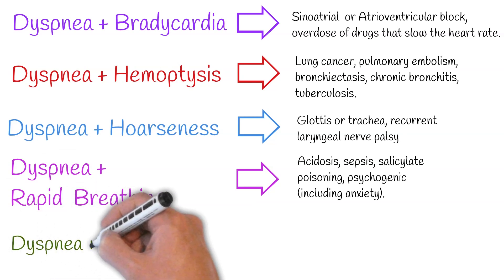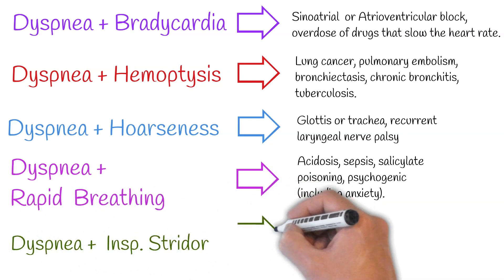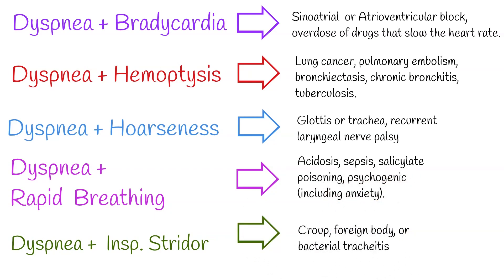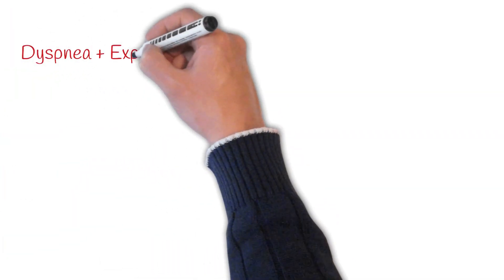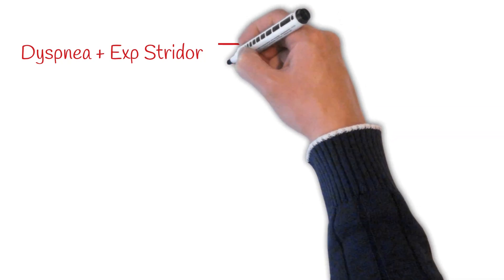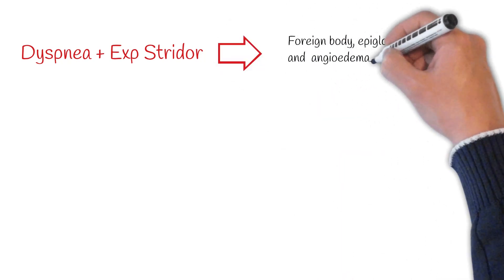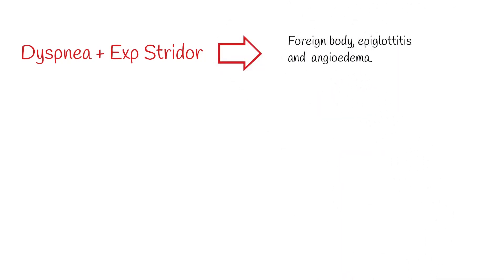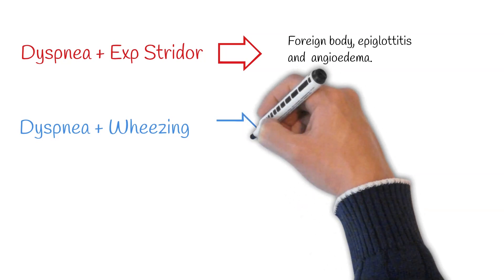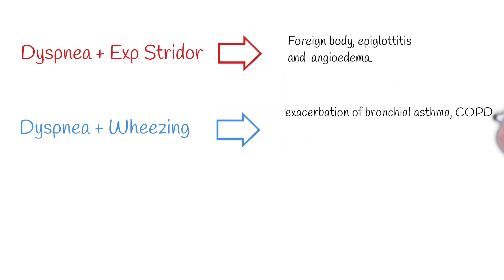Stridor — an abnormal, high-pitched, musical breathing sound — during inspiration can be a sign of croup, a foreign body, or bacterial tracheitis. Stridor during expiration or combined with inspiration can be caused by a foreign body, epiglottitis, or angioedema. Wheezing with difficulty breathing can indicate an exacerbation of bronchial asthma, COPD, acutely decompensated congestive heart failure, or a foreign body.